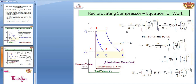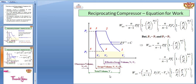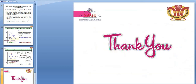For the reciprocating compressor with clearance, the actual work done is: W = N/(N-1) × P1V1 × [1 - (P2/P1)^((N-1)/N)] minus N/(N-1) × P4V4 × [1 - (P3/P4)^((N-1)/N)]. Since P4 = P1 and P3 = P2, after simplification, the actual work done is N/(N-1) × P1(V1 - V4) × [1 - (P2/P1)^((N-1)/N)]. So the clearance volume doesn't have much effect on the work done of the compressor. We will discuss volumetric efficiency and multi-stage compression in the next class. Thank you.